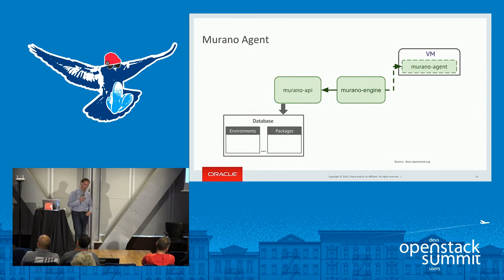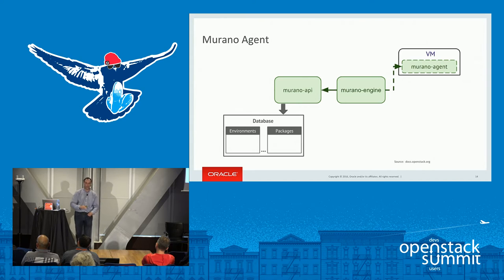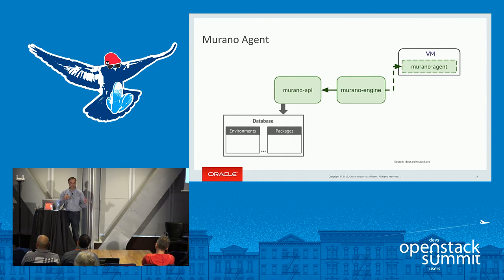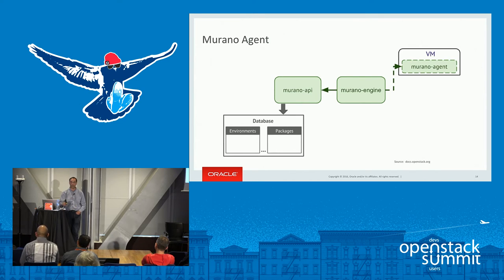One other thing Murano allows us to do is use the Murano agent. A lot of what we need to do is reach into the guest when you configure the database or application to do configuration. The Murano agent gives us a path into the guest for that initial configuration and setup, essentially exposing it to the next level. The Murano agent will be required for the Murano database application entry because we actually do reach into the guest to do some configuration.